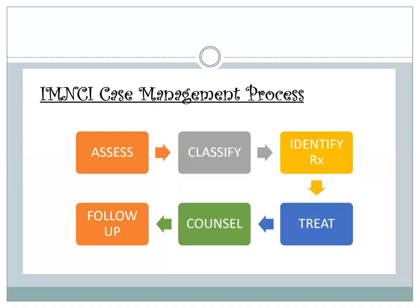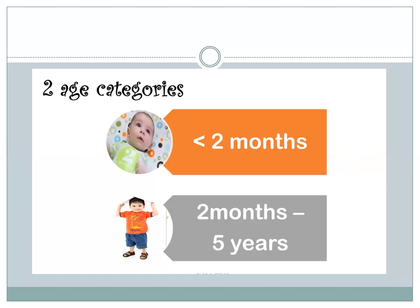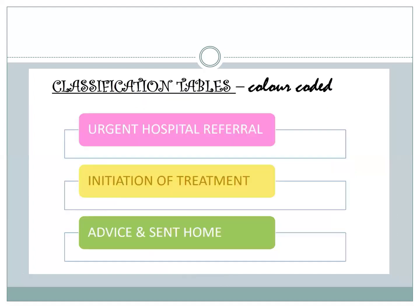This is the case management process with six steps. First, we assess the disease and classify it according to the IMNCI chart, then identify the treatment, treat the disease, counsel, and then follow up. There are two types of IMNCI charts: one for less than two months, and one for two months to five years of age.